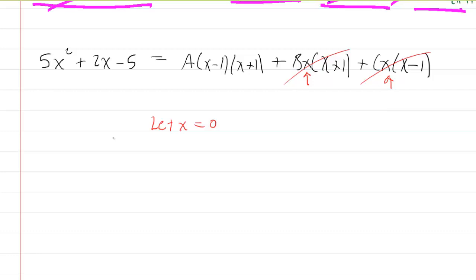Now you'll have 5 times 0 squared plus 2 times 0 minus 5 equals A times 0 minus 1 times 0 plus 1. The left side simplifies to negative 5. On the right, you have A times negative 1 times positive 1. So now you have negative 5 is equal to negative A. Therefore, A must equal 5. So we have found one of the three constants.